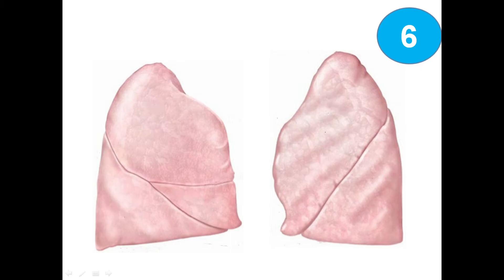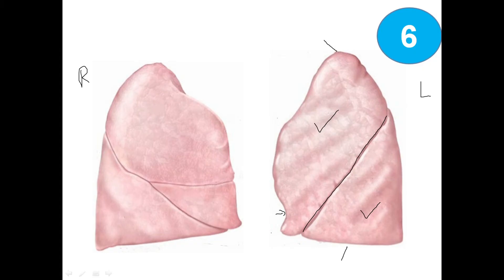We can see the anterior view of the lungs. Here we got the left lung, here we got the right lung. Most superiorly — apex; most inferiorly we got here the base. On the left lung we can see the upper lobe or superior lobe, and downside here this one is the inferior lobe. It is having one fissure which is the oblique fissure. Here is the cardiac notch and this one is the lingula — a tongue-like structure.